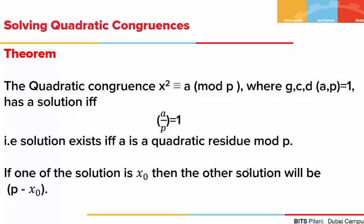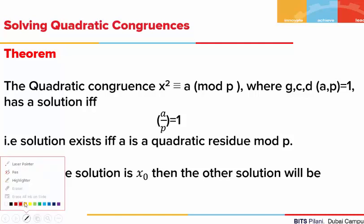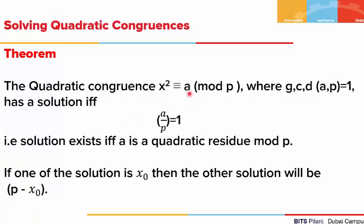Before we begin, let's look at a very important theorem which helps us in solving such congruences. The theorem states: the quadratic congruence X squared is congruent to A mod P, where P is a prime integer and GCD of A and P is 1, has a solution if and only if the Legendre symbol (A/P) equals 1. In other words, the solution exists if and only if A is a quadratic residue mod P.